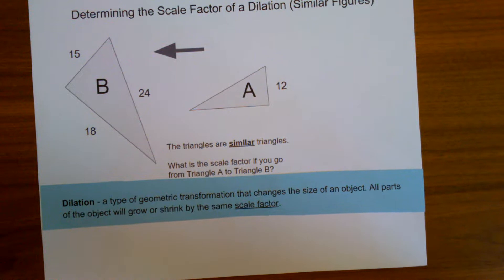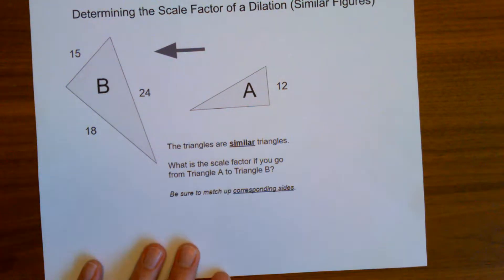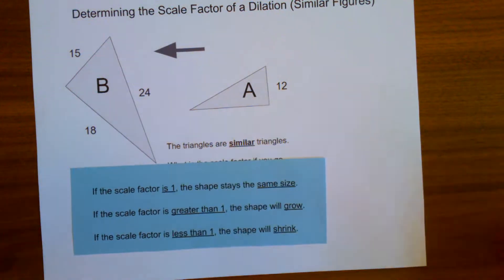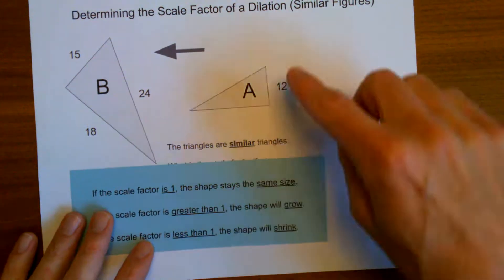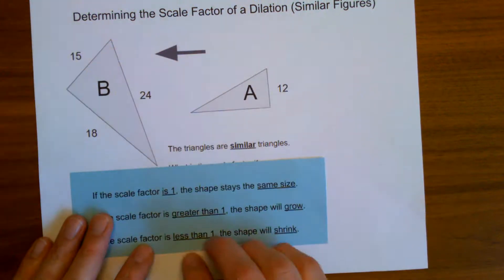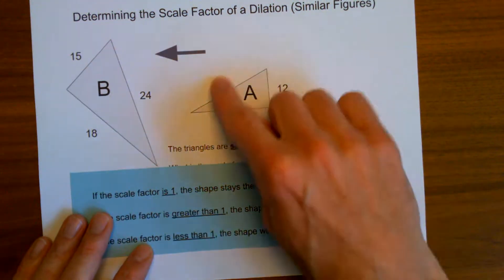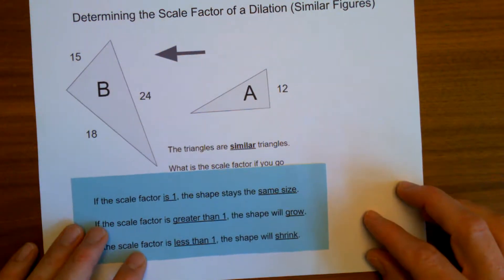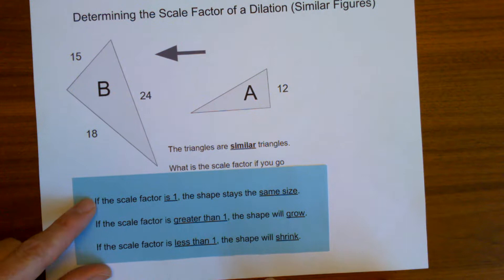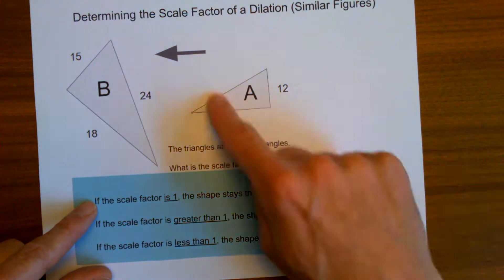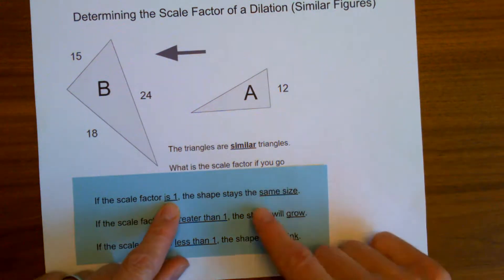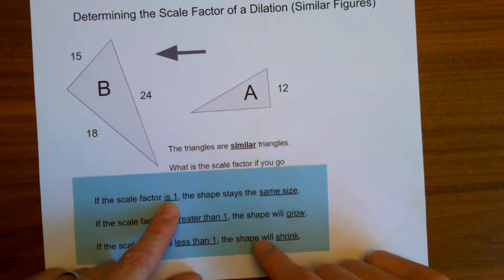So that's what we're asked here — what is the scale factor? The scale factor is what you multiply by to get the new side lengths. I'm starting with triangle A and moving to triangle B, multiplying the side lengths of triangle A by some number to get the new side lengths of triangle B. If the scale factor is one, multiplying by one doesn't change any quantities, so the side lengths remain the same and the shape stays the same size.